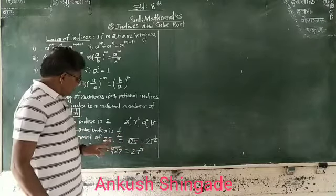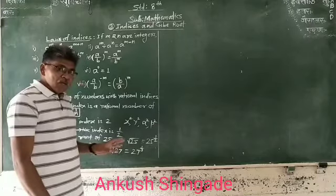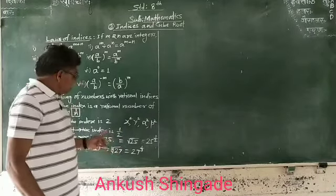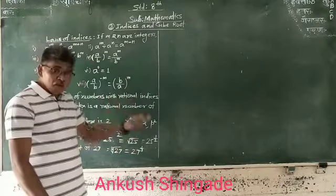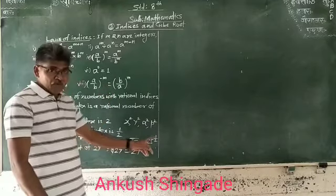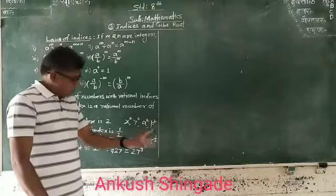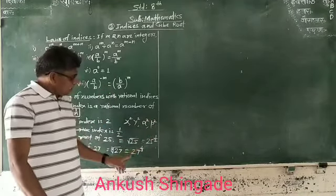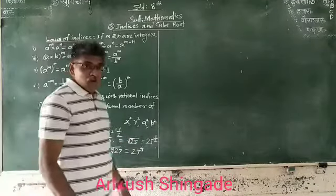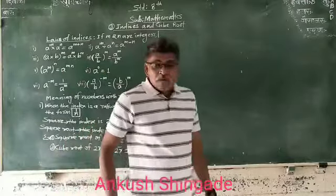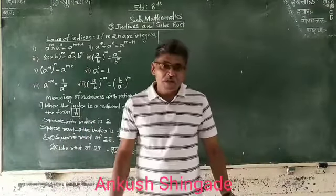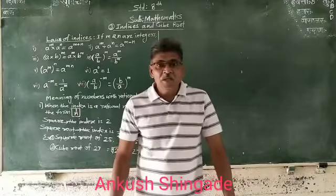Similarly, the square root of 25 is 5. The value of the square root of 25 is 5. The cube root of 27 is 3. You already know about squares and square roots, cubes and cube roots, and you are familiar with the tables.